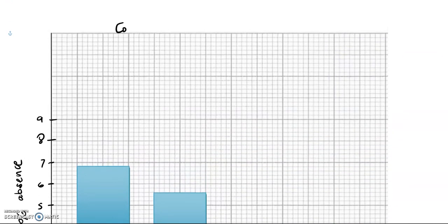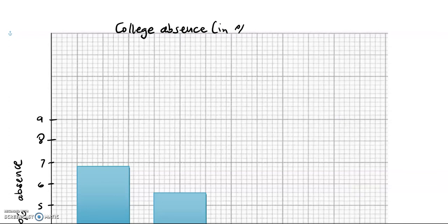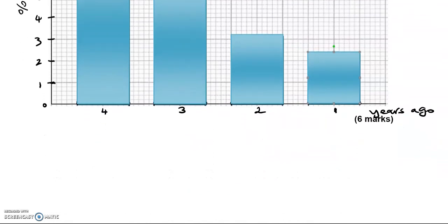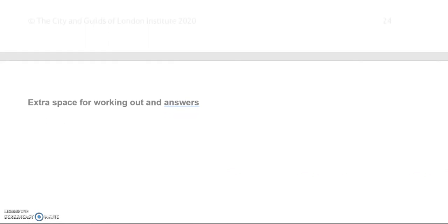Now we can give this a title to say college absence in percentage in last four years. And that is complete. And this is the end of the section.